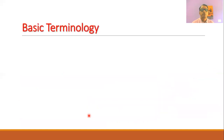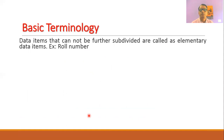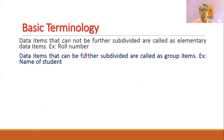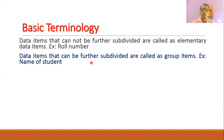Let us understand some basic terminology involved in data structures. Data elements that cannot be further divided are called primitive or elementary data elements. For example, a roll number is unique and cannot be further divided — it is an elementary data element. Some data elements can be further divided and are called group items. For example, a student's name can be divided into first name, middle name, and last name — making it a group item.